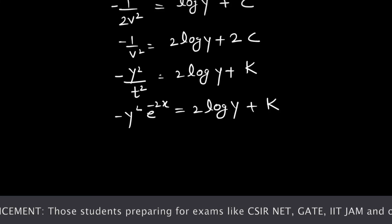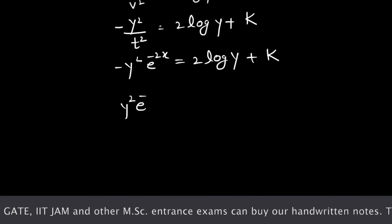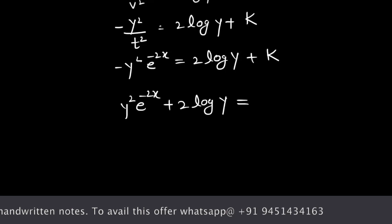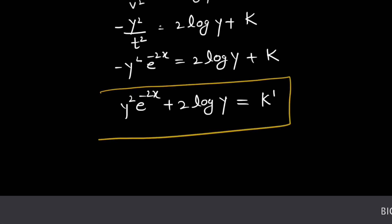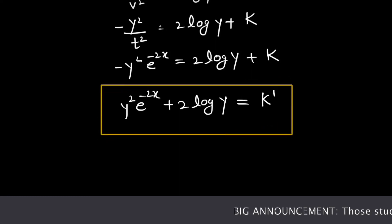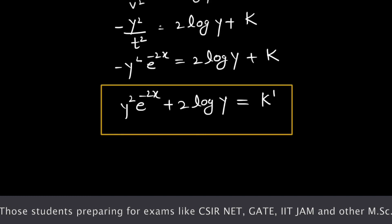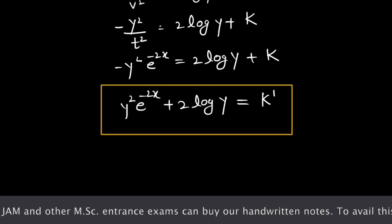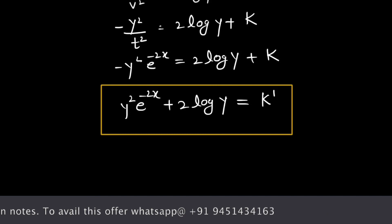We can write the solution as y² e raised to power minus 2x plus 2 log y equals k prime, where k prime is an integrating constant. This is the solution of the given differential equation. There are many substitutions involved, which makes it tricky, but following these steps you can solve it easily. If you find this video informative, please share and support by subscribing. Thank you for watching.